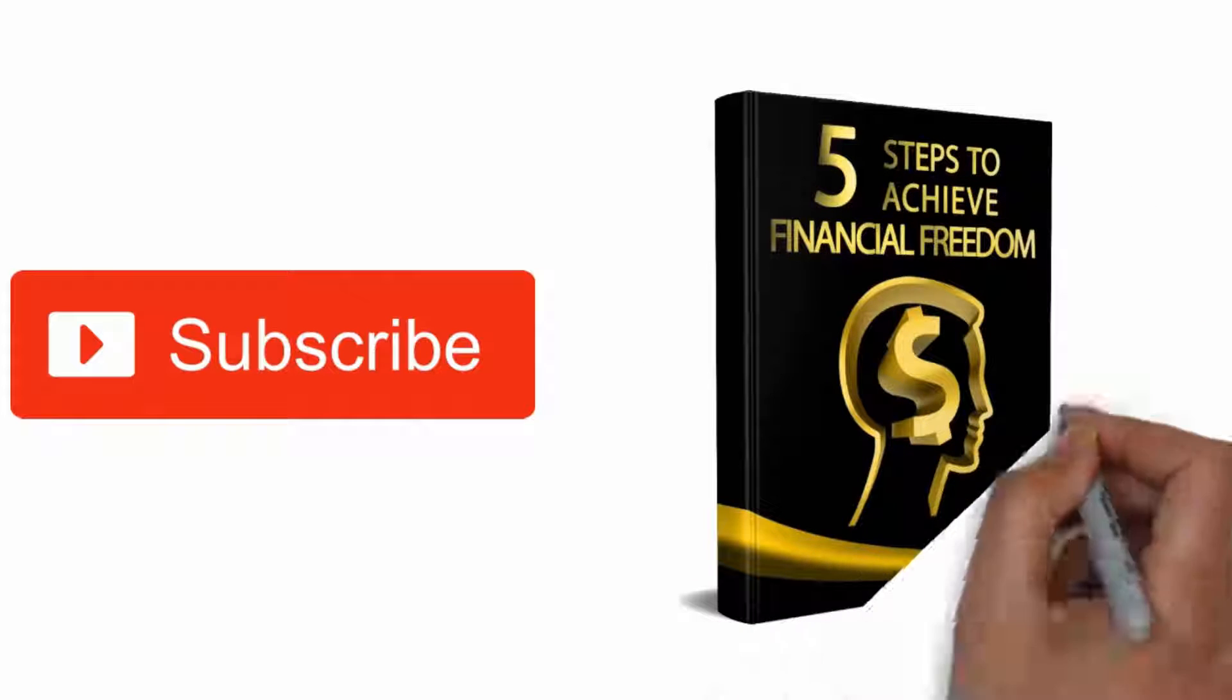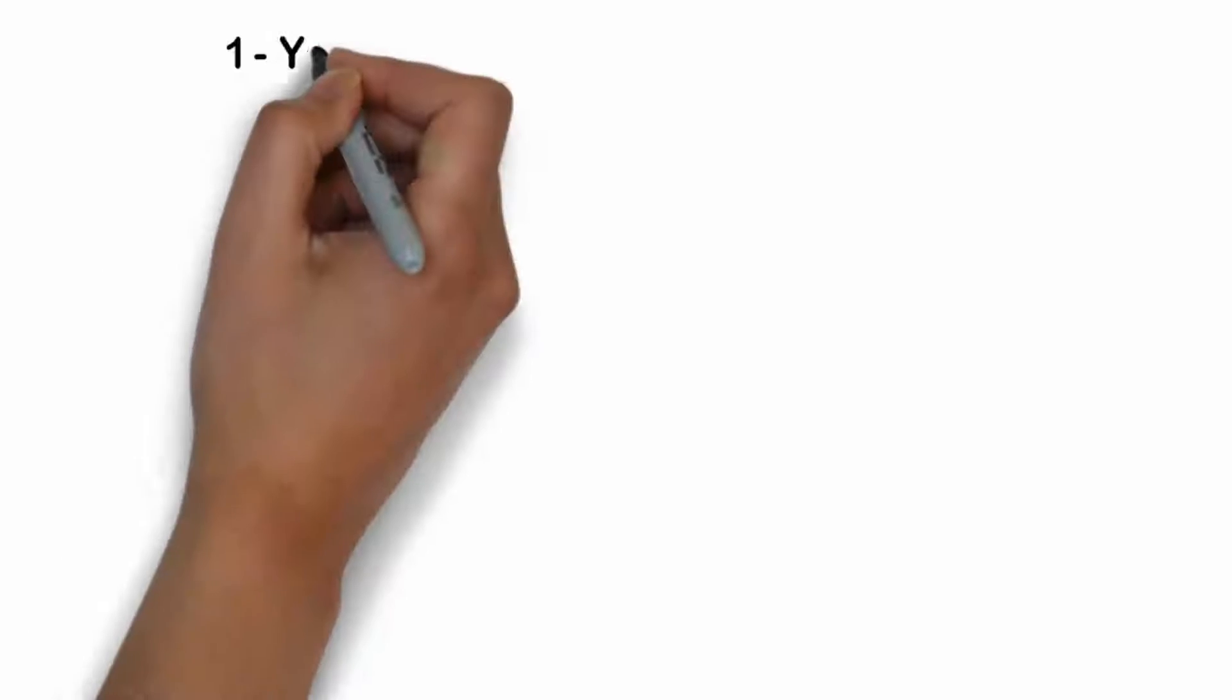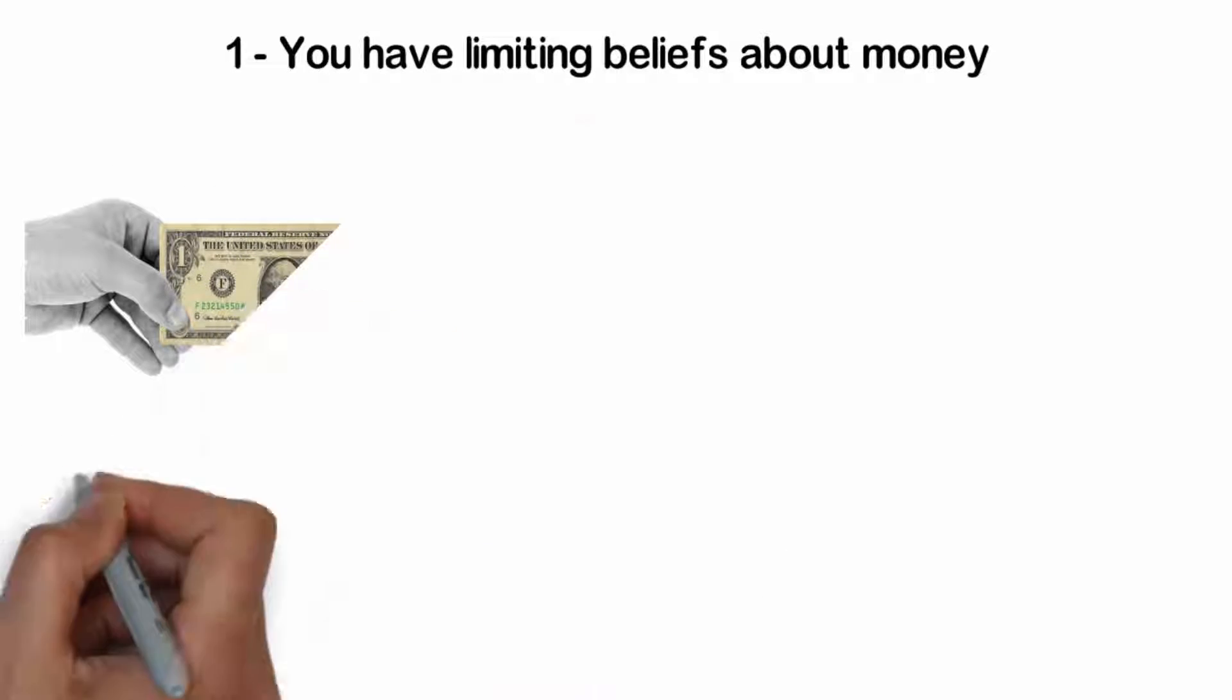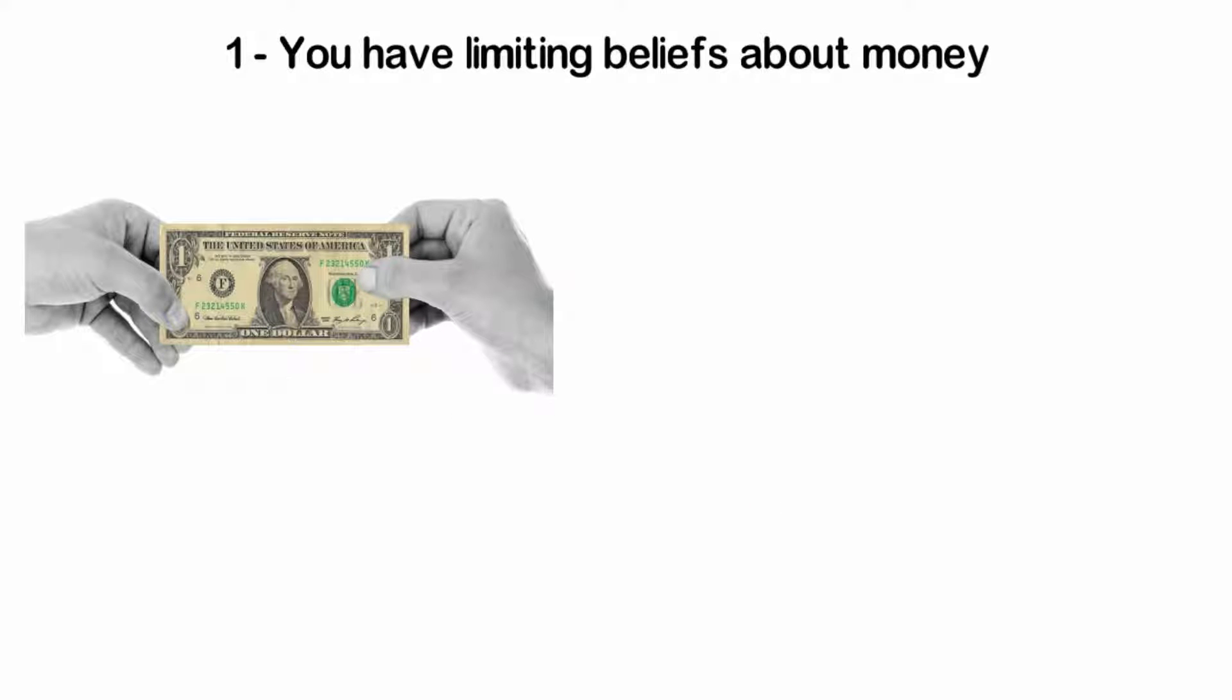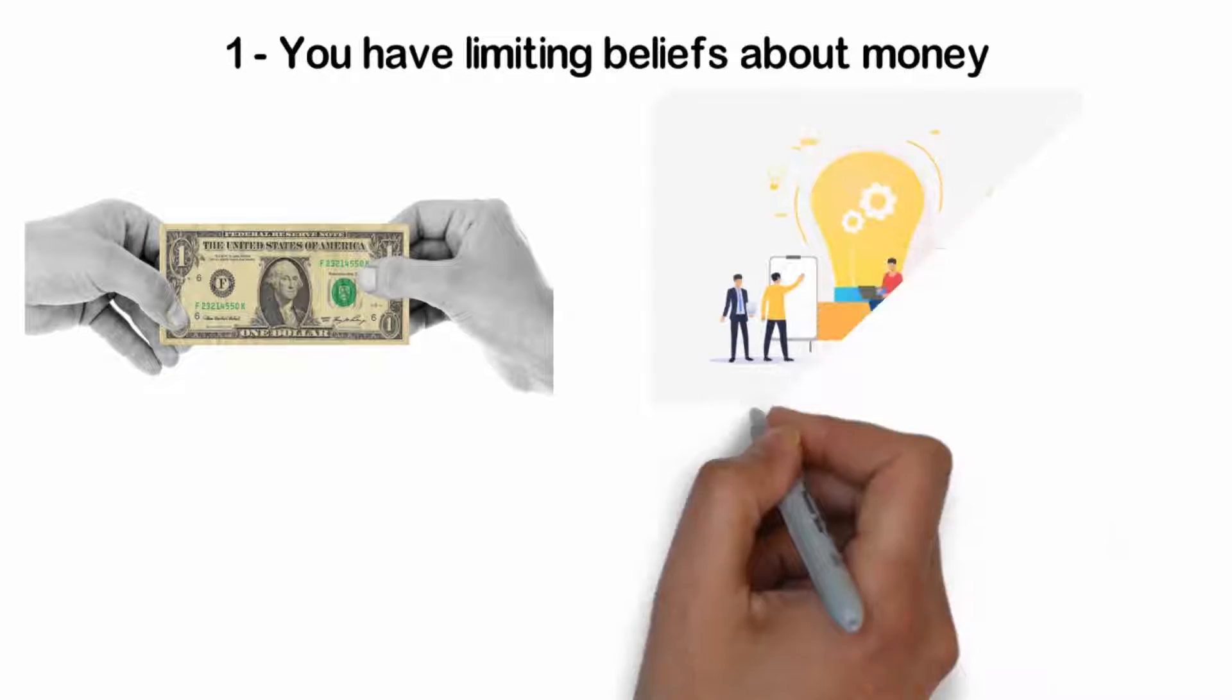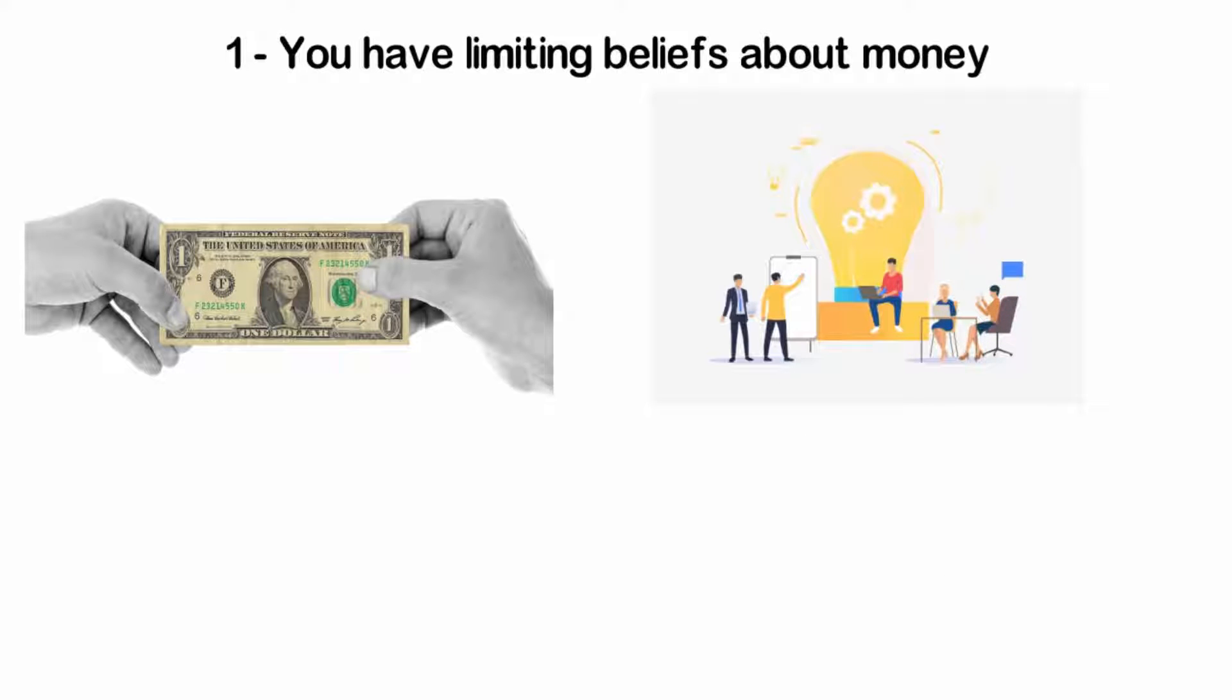Number 1: You have limiting beliefs about money. Everyone can admit it without difficulty. I would like to be rich. Yet, many people unknowingly have a conflicting relationship with money. Many people have preconceived ideas about wealth. For example, they imagine that having money is immoral or that all rich people are necessarily bad. Similarly, many have a negative opinion on their own relationship to money. They think, for example, that they do not deserve to be rich or that they are unable to manage a large budget.